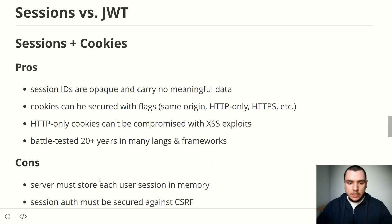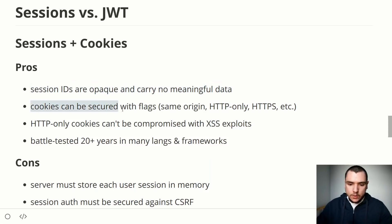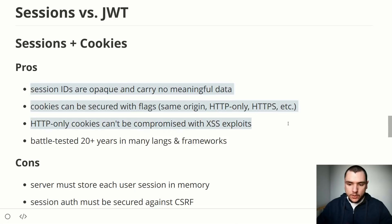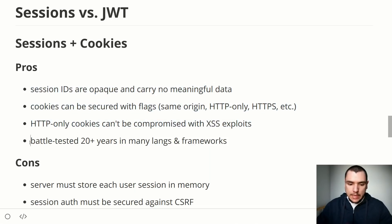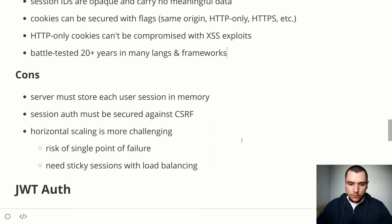Now let's compare sessions and JWT. For sessions and cookies: session IDs are opaque and carry no meaningful data, so if a session cookie is stolen the attacker cannot infer useful data. Cookies are secured with special flags — SameSite, HttpOnly, and HTTPS flags — which add actual layers of protection. HttpOnly cookies used for auth cannot be compromised with XSS exploits because they're not accessible by client-side JavaScript. Cookies have also been battle-tested for many years. On the downside, the server has to store every user session in memory — Redis or a database.